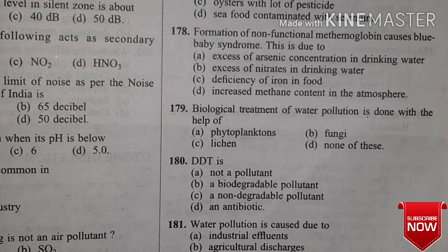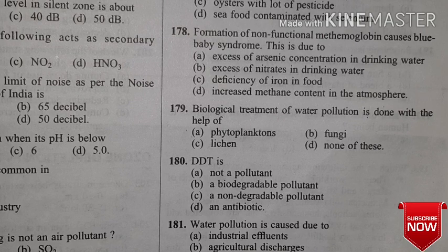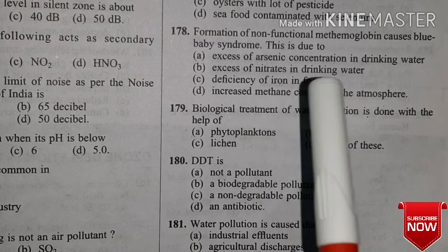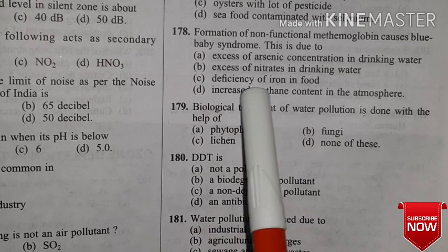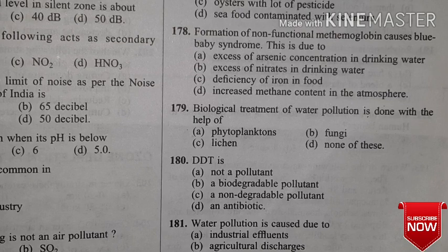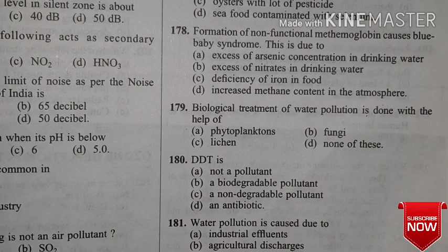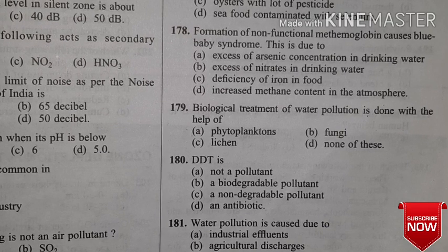Question 178: Formation of non-functional methemoglobin causes blue baby syndrome. When hemoglobin is deformed it is called methemoglobin, and this causes blue baby syndrome — the baby becomes blue in color. What causes this? Options: excess arsenic concentration in drinking water; excess nitrate in drinking water; deficiency of iron in food; increased methane content in atmosphere. This is very important — please give your answers. Remember both Minamata disease and blue baby syndrome are from water pollution.